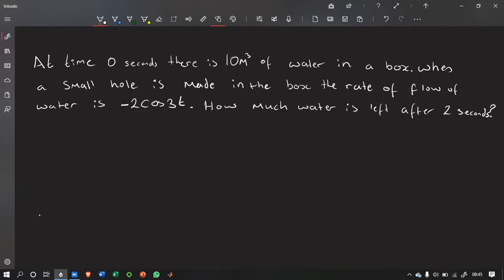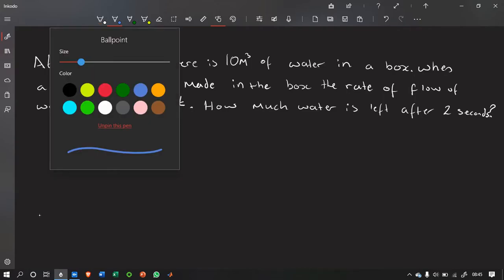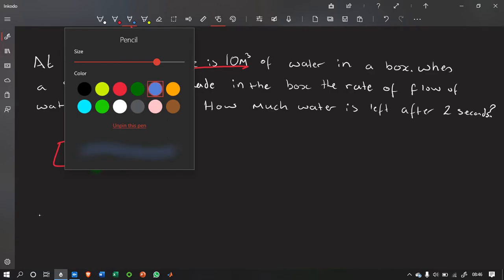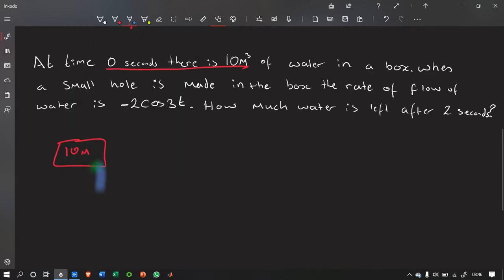So, first of all, we need to realize that we've got initial conditions. Pink print, which is here. So, before anything happens, in this box, there's going to be 10 metres cubed of water. But then, a hole is made. We'll make that hole at the bottom of the box. There. And water starts to flow out. Which is probably blue, actually.